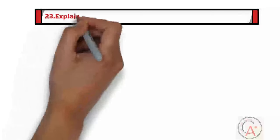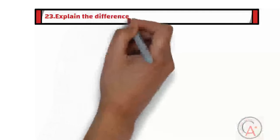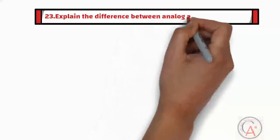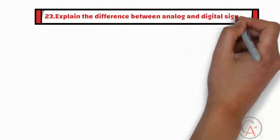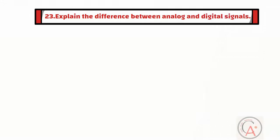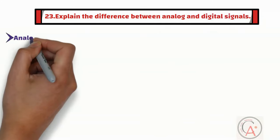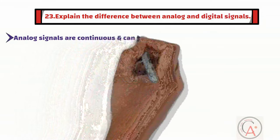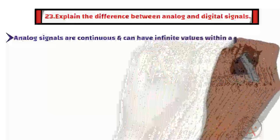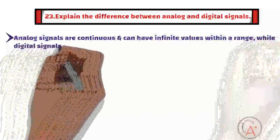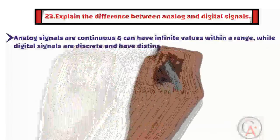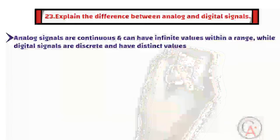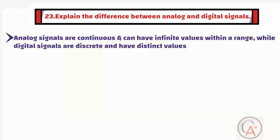The twenty-third question is: explain the difference between analog and digital signals. Analog signals are continuous and can have infinite values within a range, while digital signals are discrete and have distinct values, typically zero or one.